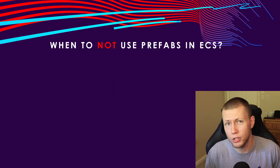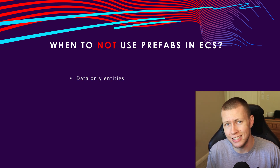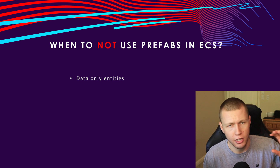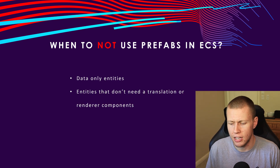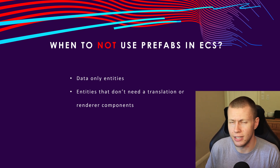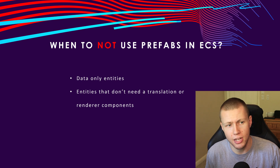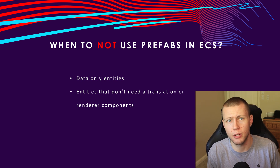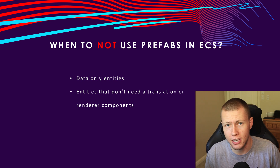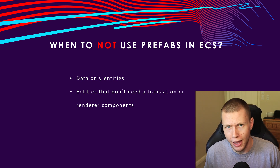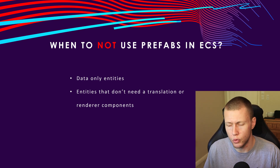However, there are some reasons why you would not want to use the prefab workflow. This mostly applies to purely data-only entities — entities that are just holding some data but don't necessarily need to live anywhere in the world, don't need to render, or have a translation component. If they're just holding bits of data, it's much easier to spawn those through code and configure your data as needed. In the Unity engine, every game object has a transform component, and when we convert a game object to an entity, that transform is converted into a LocalToWorld component, a Translation component, a Rotation component, and potentially a Scale component. So for purely data-only entities, we don't need all that extra transform stuff — it's much preferred to create those entities through code.